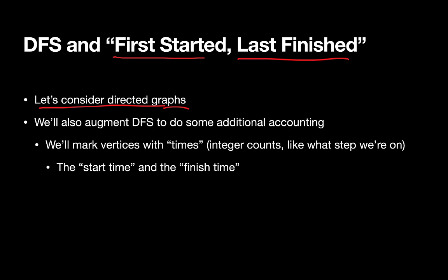We'll start off with DFS. We'll augment our DFS algorithm to do some additional accounting. We'll mark vertices with times — basically a start time and a finish time. Rather than times, you can think of these as counts. Every time we process a node, we add one to the count. The count indicates when a node starts being processed and when it's finished.